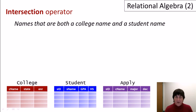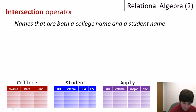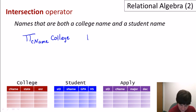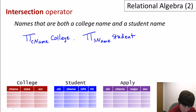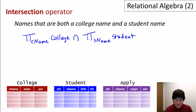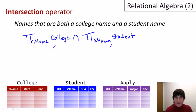The last of the three set operators is the intersection operator. Suppose we want to find names that are both a college name and a student name — perhaps Washington is the name of both a student and a college. We get the college names, get the student names, and perform an intersection of those two expressions to get the result. Like the previous example, technically the two expressions on both sides of the intersection ought to have the same schema, which I'll show how to handle shortly.